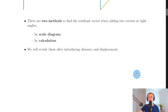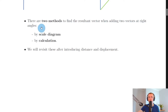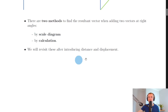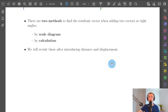There are two methods to find the resultant vector when adding two vectors at right angles: the scale diagram method and the calculation method. We'll revisit these after introducing distance and displacement in the next video.